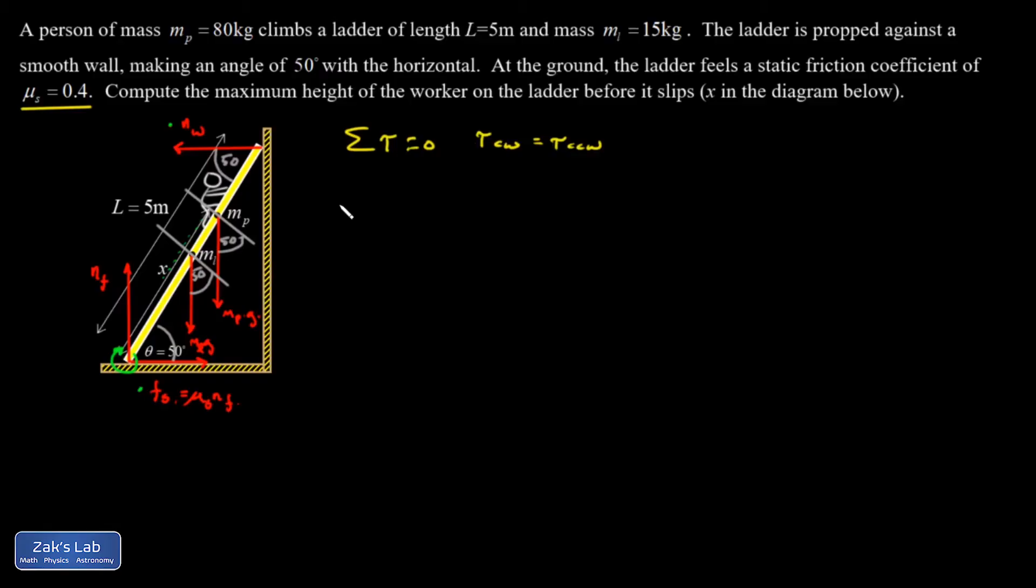Plugging all that in, and I'm going to stay symbolic for a while, I have my clockwise torques. Mass of the ladder times G times the cosine of 50 degrees. I'll just leave it as a theta for now. Exerted through a lever arm of L over 2 because it's happening right at the center of the ladder.